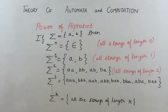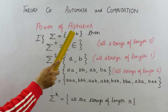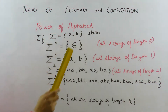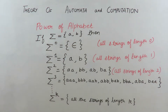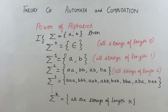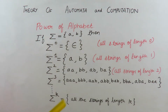Before going on to language, I want to explain one important term: the power of alphabet. Suppose sigma equals {a, b} is an alphabet. Then sigma raised to the power 0 means all the strings in this set have length 0. Only a null string can have length 0, so we represent this set as null. Sigma raised to the power 1 means all strings of length 1 made by combinations of symbols from the alphabet set. Our main alphabet set consists of a and b, so we can make only a and b as two strings. Sigma 1 contains a and b only.